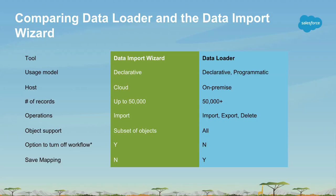Data import wizard is quicker and more accessible, but it only does import. Data loader does import, export, and delete. Also consider the objects you want to import into — the data import wizard supports the most common standard objects and all custom objects, such as account, contact, lead, and others. Data loader supports any object available on the public APIs that your user has permission to access.